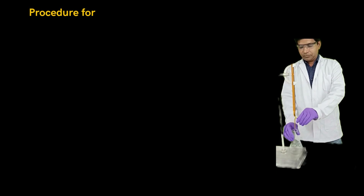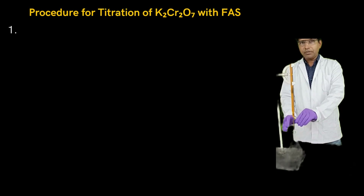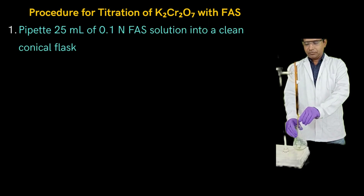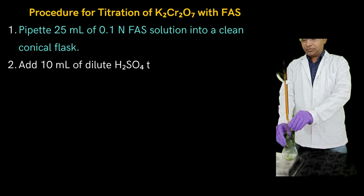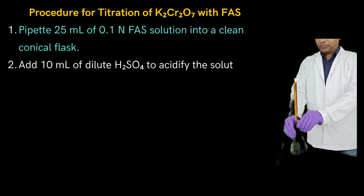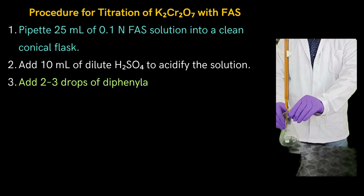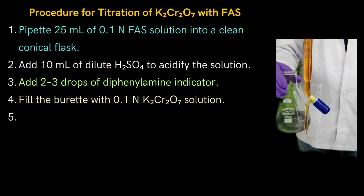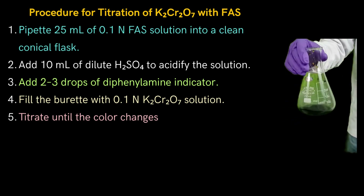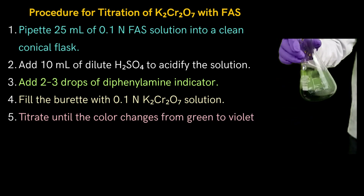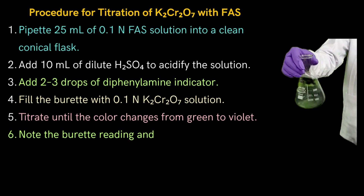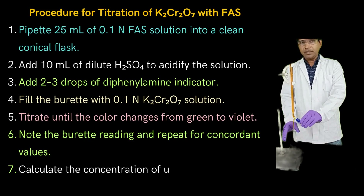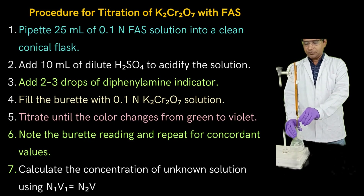Procedure for titration of K2Cr2O7 with ferrous ammonium sulfate (FAS): First, pipette 25 ml of 0.1 Normal FAS solution into a clean conical flask. Second, add 10 ml of dilute H2SO4 to acidify the solution. Third, add 2–3 drops of diphenylamine indicator. Fourth, fill the burette with 0.1 Normal K2Cr2O7 solution. Fifth, titrate until the color changes from green to violet. Sixth, note the burette reading and repeat for concordant values. Seventh, calculate the concentration of unknown solution using N1V1 = N2V2.